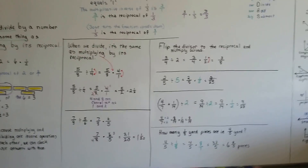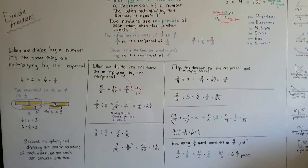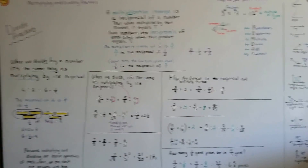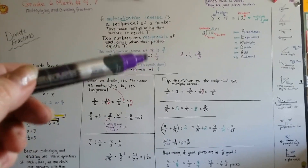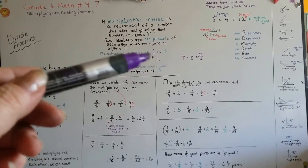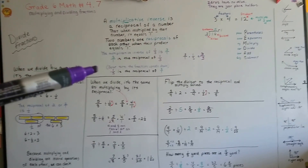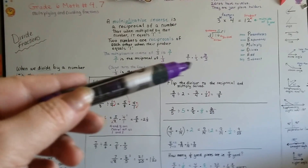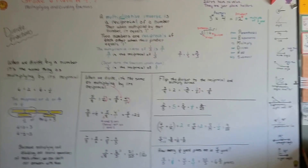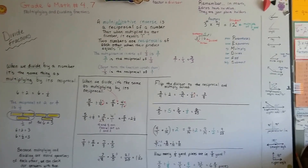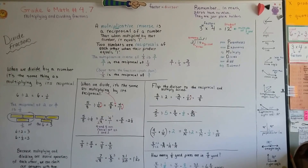This is no big deal! Now you know this big fancy word — multiplicative inverse — and you know that all it is, is taking a fraction, flipping it upside down, or taking a whole number, putting a 1 underneath it, multiplying it to its inverse and it'll equal 1. Keep up the good work and I'll see you next video. Bye!